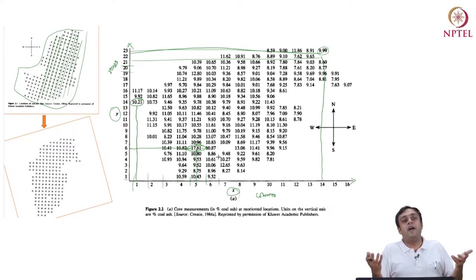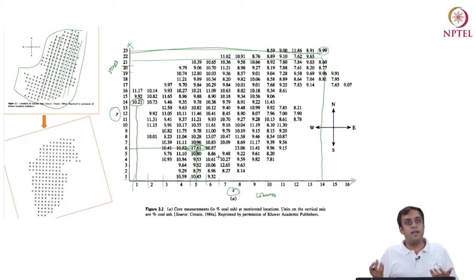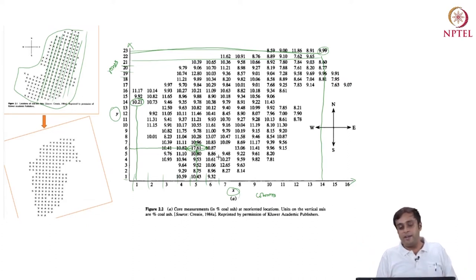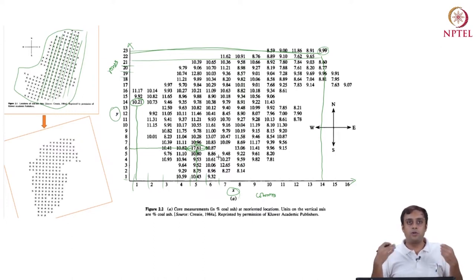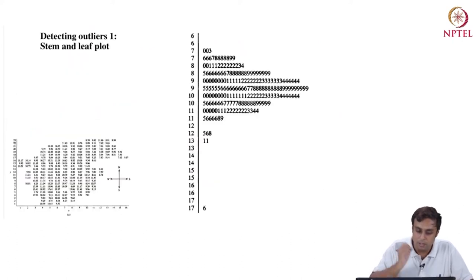One can also compute a sample mean. For non-spatial data you sum all values and divide by the total number of observations. Here, you can get a mean row by row — for row 23, row 21, and so on — and a separate mean for each column. Now you are getting mean values in the east-west direction and north-south direction, which are different. This right away introduces the spatial dimension of the data to summary statistics.